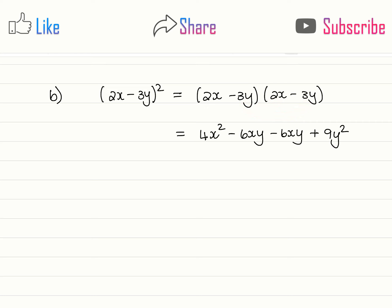So if we multiply out we have 4x squared minus 6xy minus 6xy plus 9y squared. And again we will add up like terms.